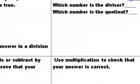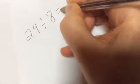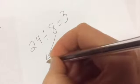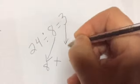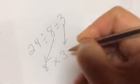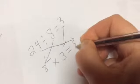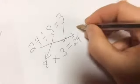Okay, use multiplication to check that your answer is correct. 24 divided by 8 equals 3. If 24 divided by 8 equals 3, then 8 times 3 should be 24, because it's a fact family. 8 times 3 equals 24, which was the dividend, which is now the product. And that matches up.